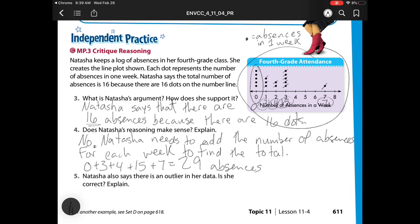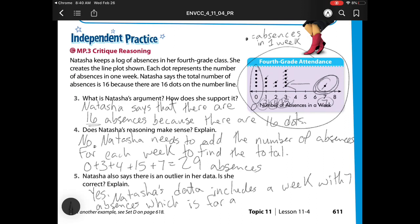For question number 5, it says Natasha also says that there is an outlier in her data. Is she correct? Well, remember, an outlier is any data that's far away from the others. If I look, this 7 dot is very far away from our other dots. So she is correct with that. So we would say yes, Natasha's data includes a week with 7 absences, which is far away or very different from the rest of the data.